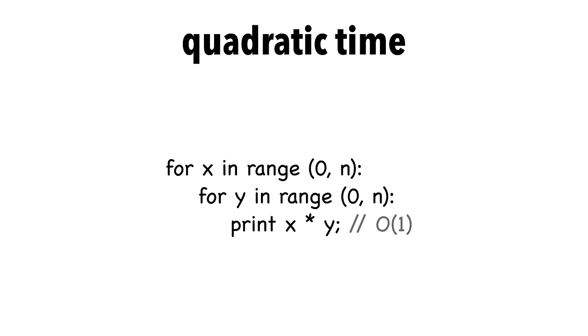Finally, let's look at quadratic time. I think you can see that the print statement will be executed n times n, which gives us Big O(n²).